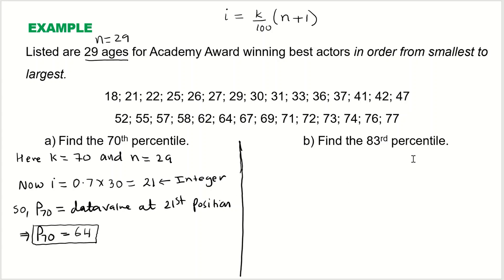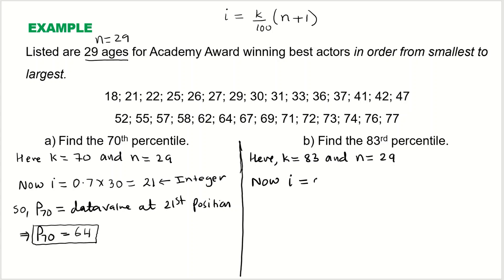Now let's look at the second part where i will be a decimal value, not an integer. Here we are looking at the 83rd percentile, so k = 83 and n = 29. Using the formula, i = (83 / 100) × (29 + 1) = 0.83 × 30 = 24.9.